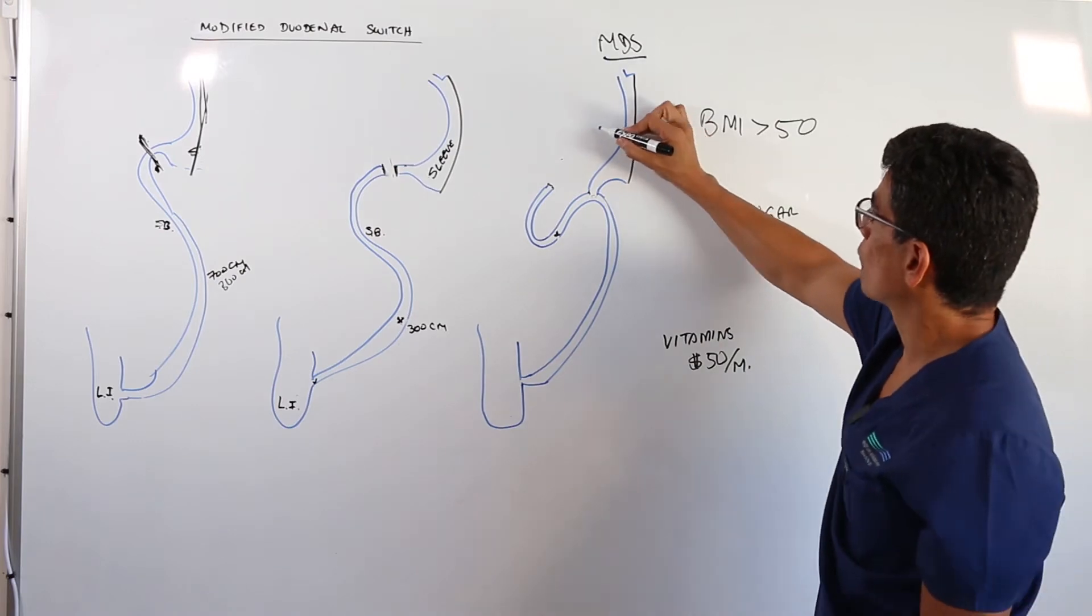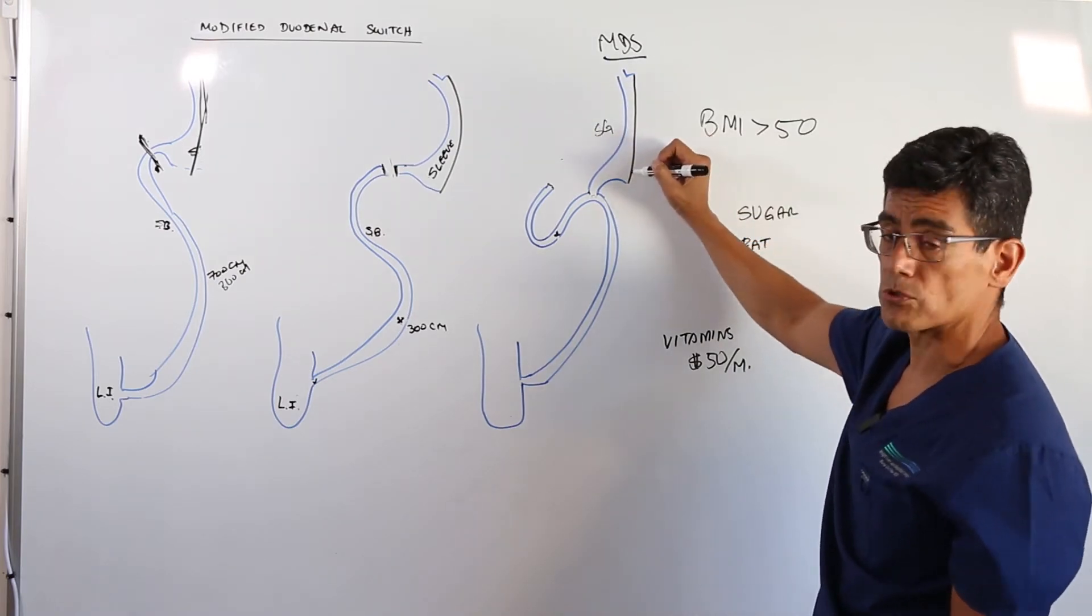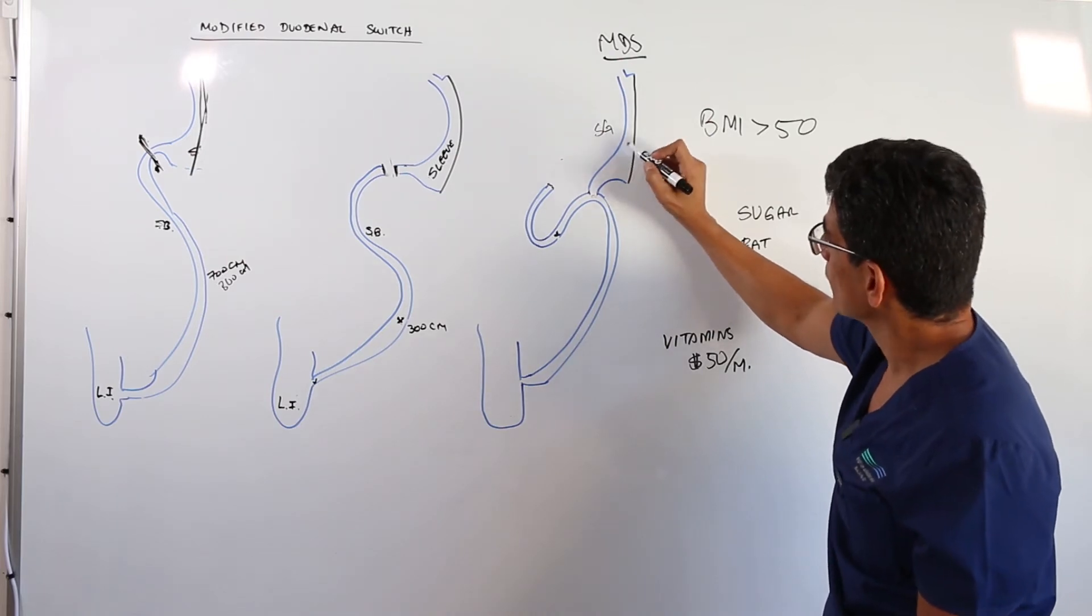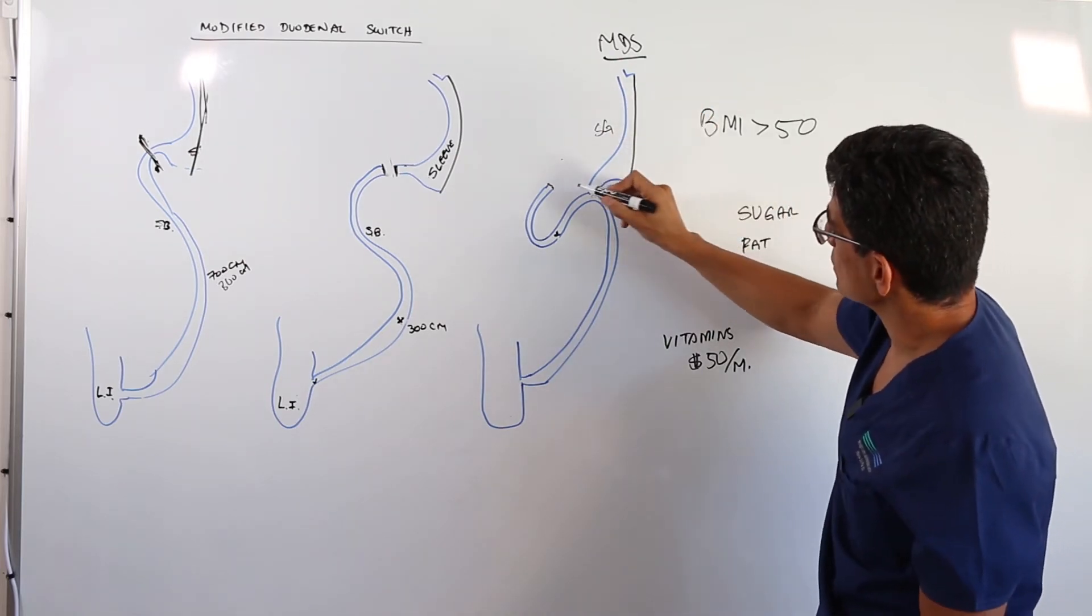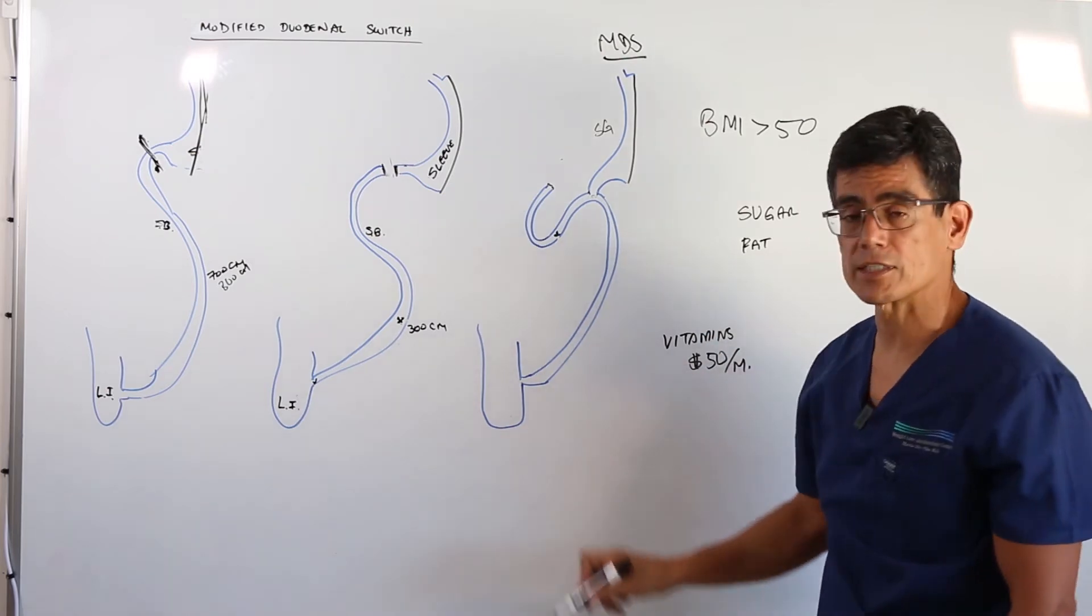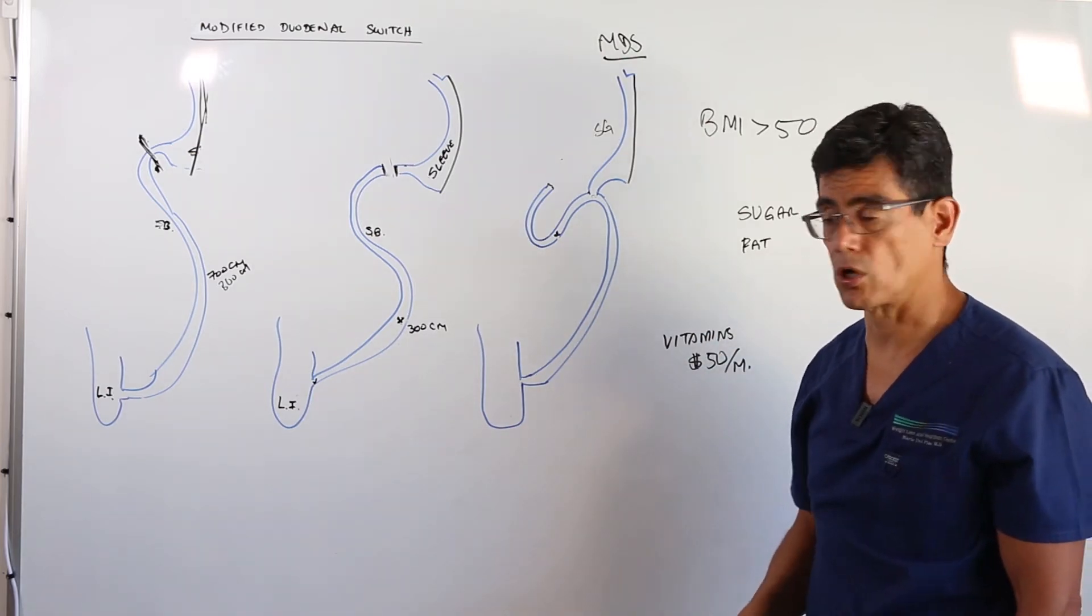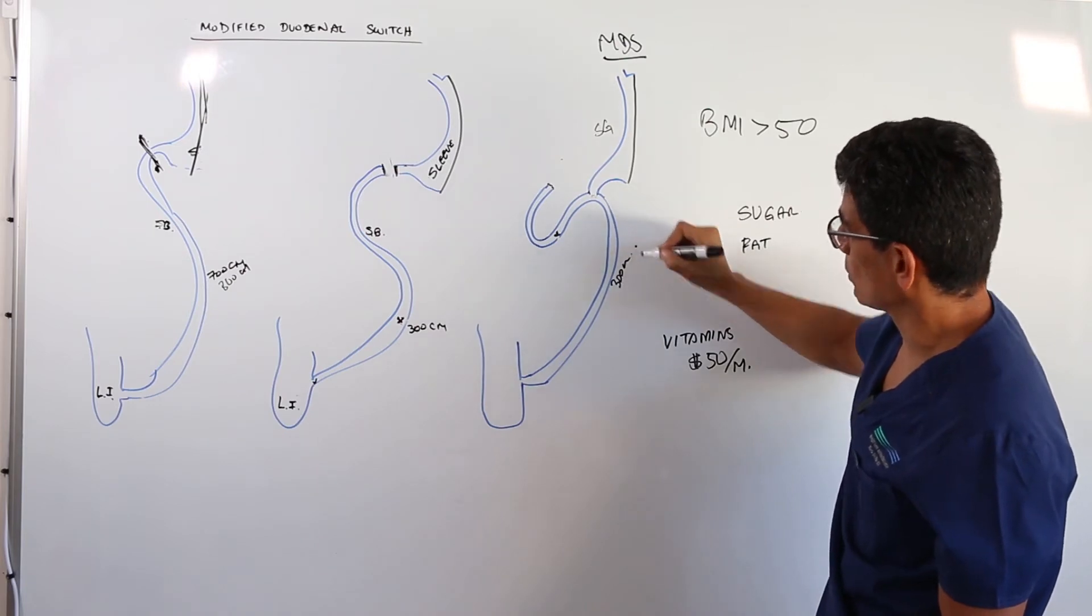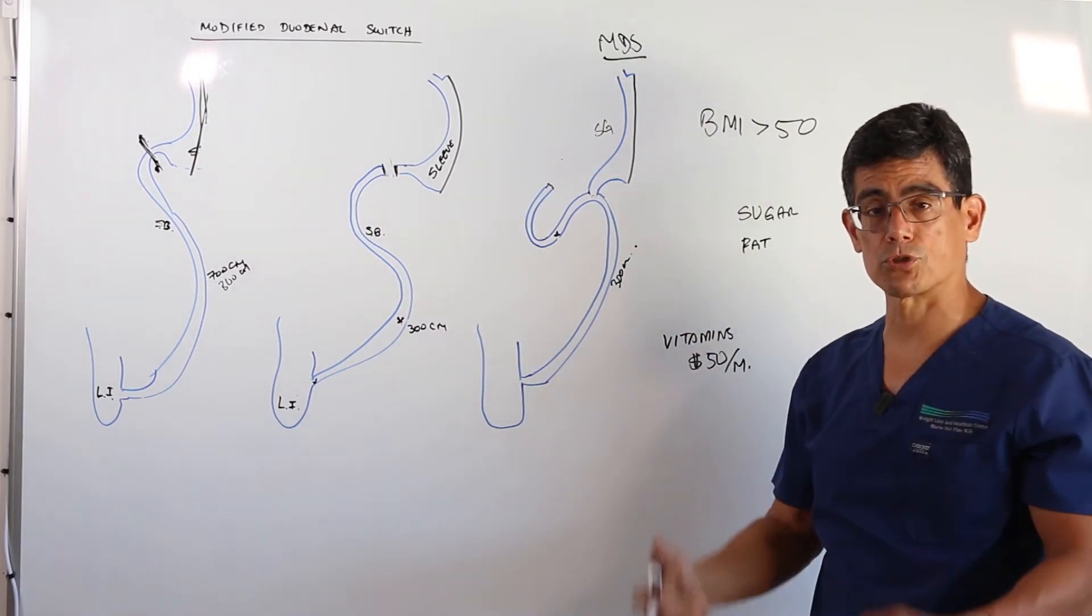So it's a combination of a sleeve gastrectomy here, which is going to restrict the amount of food you can eat. It's going to cut your appetite. But the food is going to go here. And instead of going through the entire length of intestine, which is 700 to 800 centimeters long, it's only going to go through 300 centimeters. So there's going to be decreased absorption of nutrients.